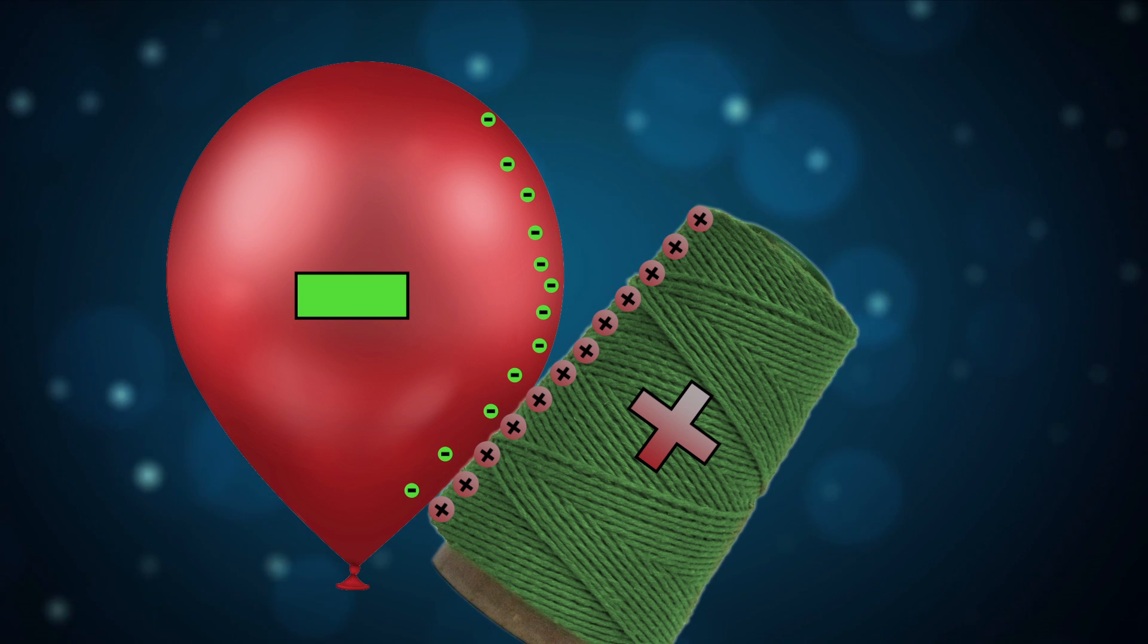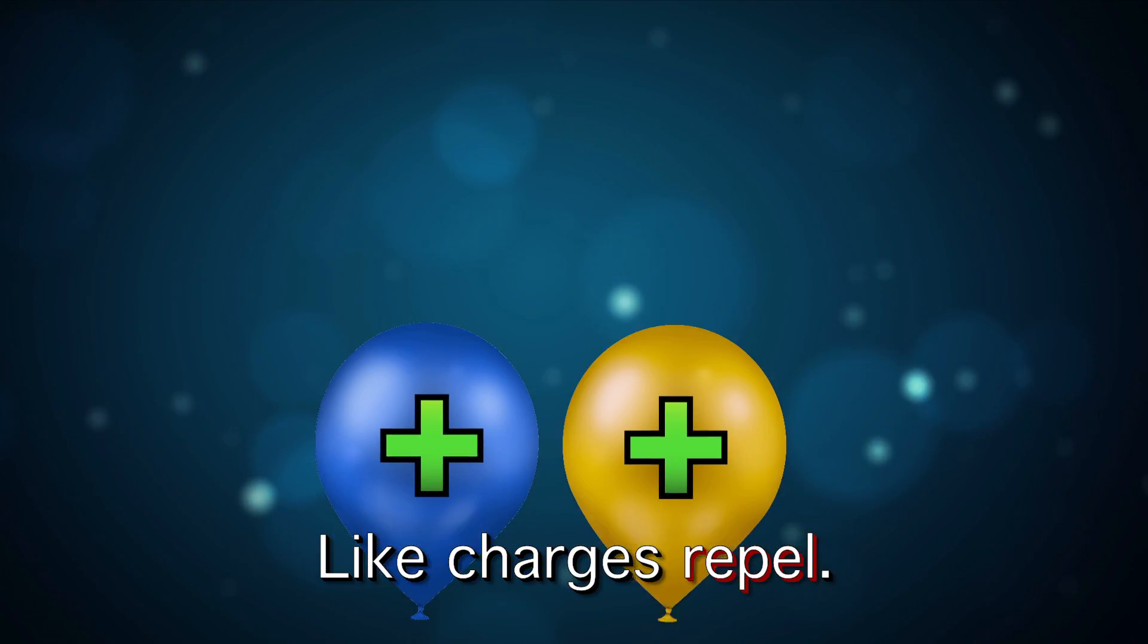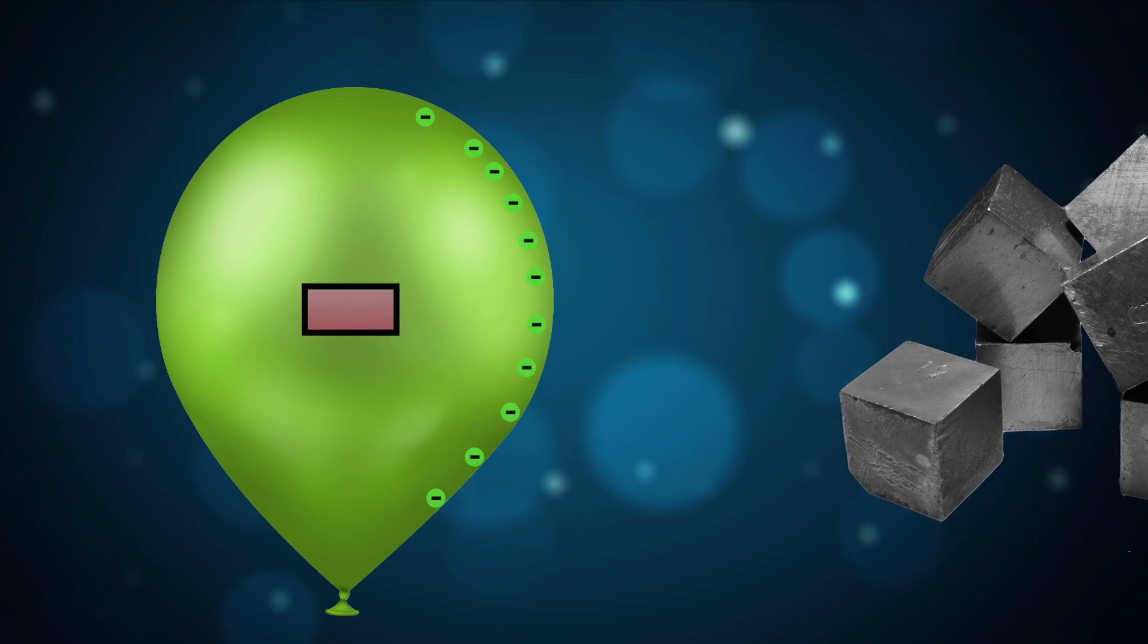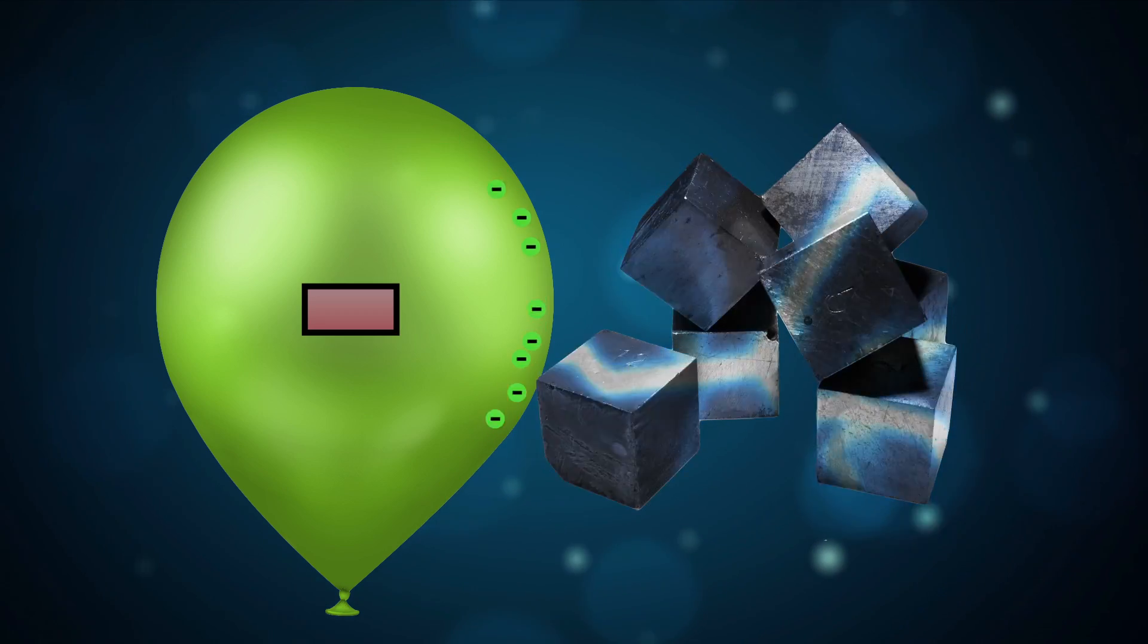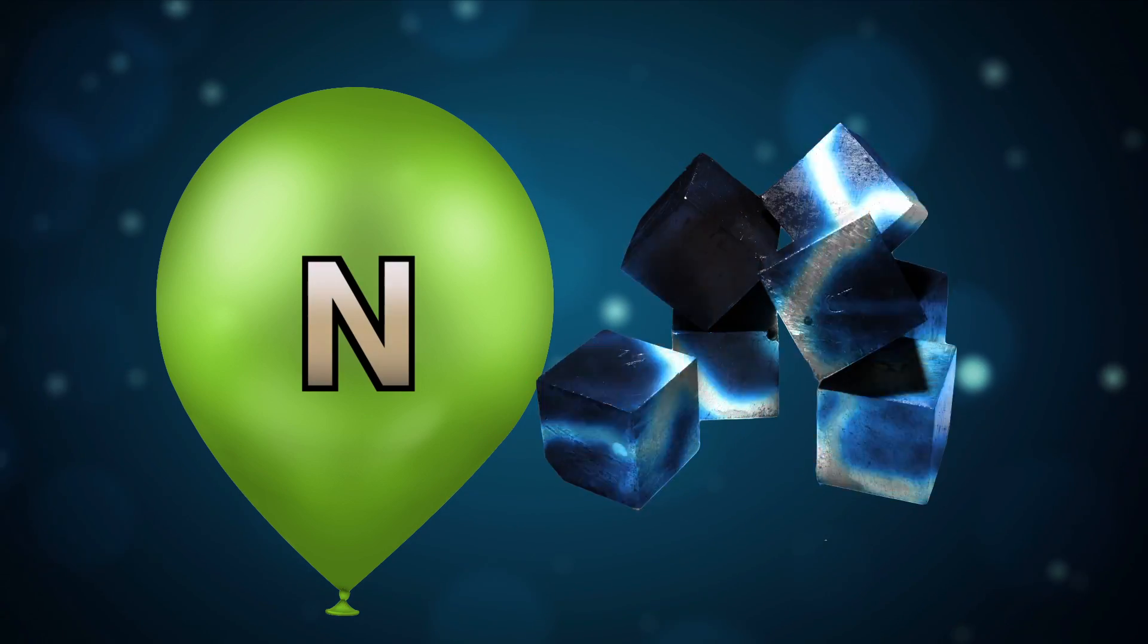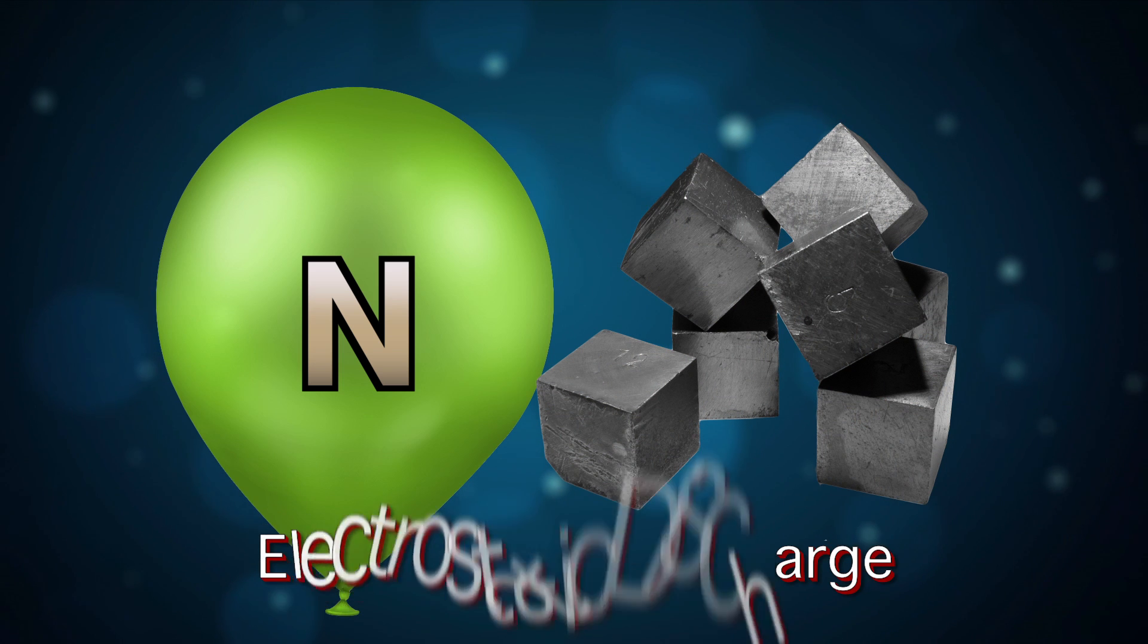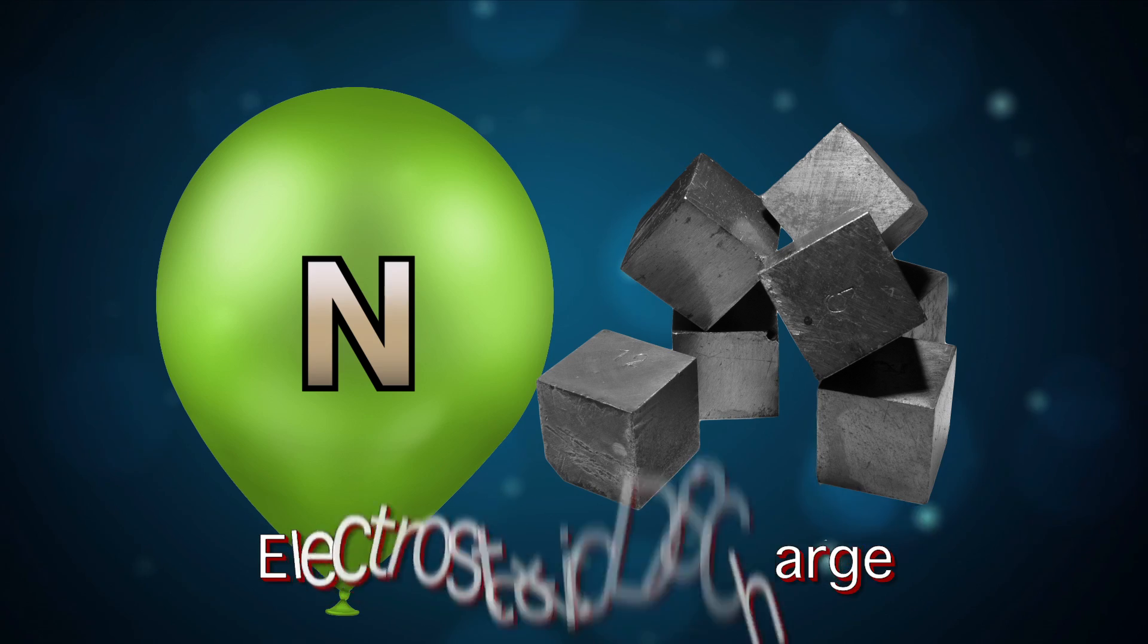Electrically charged materials will have either a negative or positive charge. Like charges repel, but opposite charges attract. These materials will retain an electrical charge until they come in contact with an electrical conductor. The electrical buildup will be able to escape through the conductor by means of an electrical current, neutralizing the charged material. This phenomenon is called electrostatic discharge.